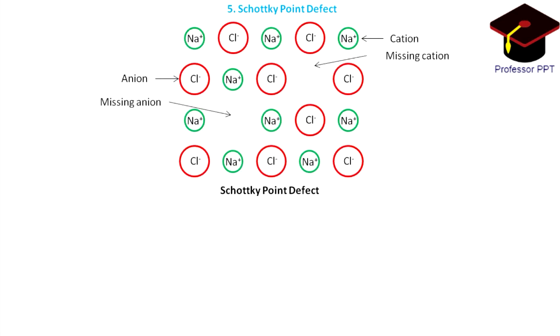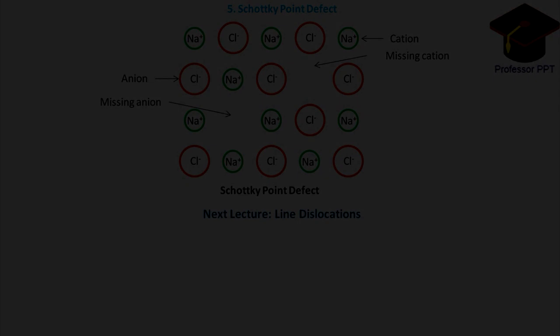Schottky defect: When a cation and an anion is missing from their lattice positions, it gives rise to Schottky defect. That is it for this lecture. In the next lecture, we shall discuss the line dislocations. Thank you.